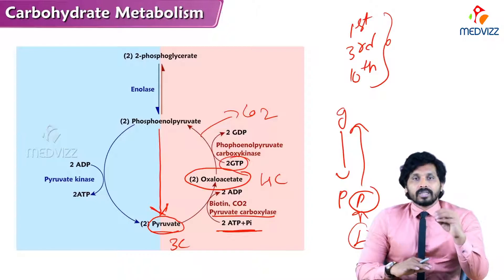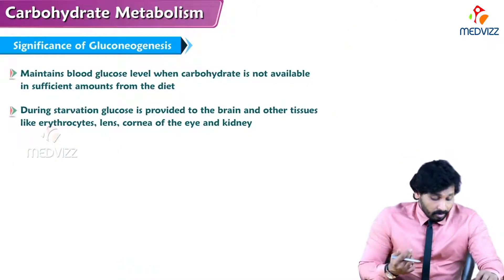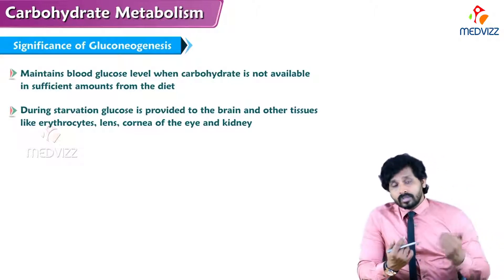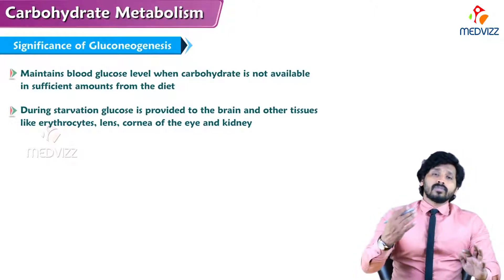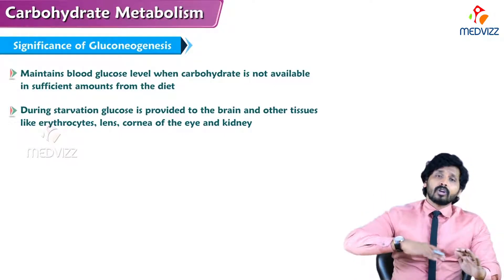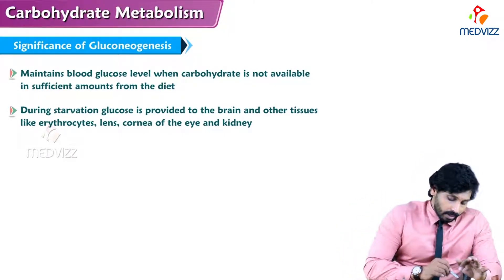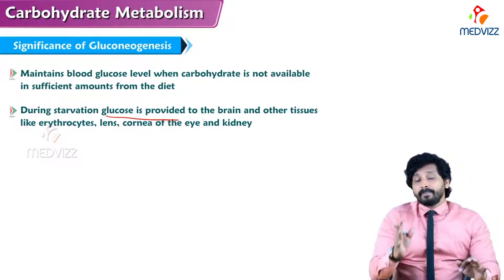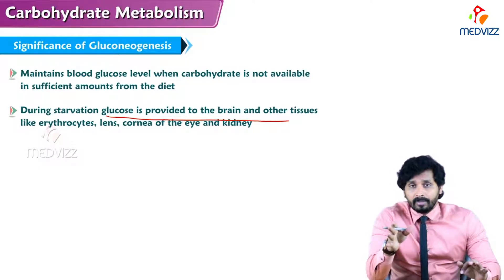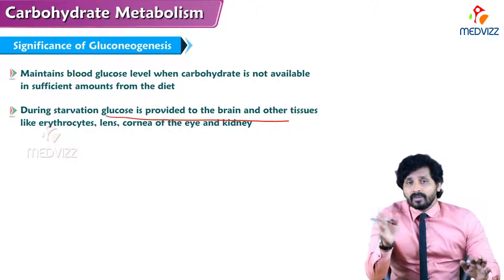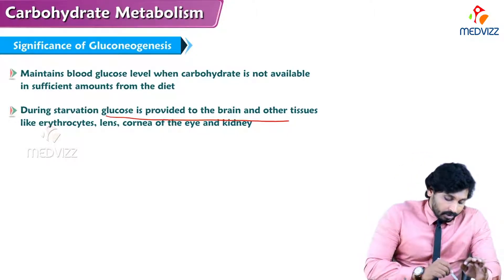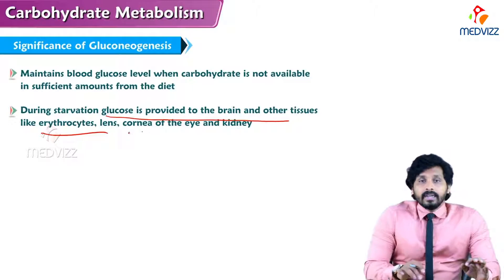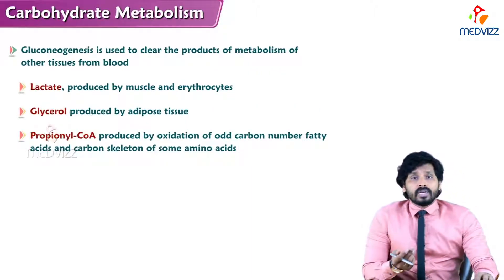When you study glycolysis properly, it is easy to understand the pathway of gluconeogenesis. Now, coming to the significance of gluconeogenesis: when there is a decrease in glucose concentration in the blood, the liver initiates gluconeogenesis, increases glucose from non-carbohydrates, and sends it to circulation to bring back normal blood glucose levels. During starvation, glucose is provided to the brain, which is solely dependent on glucose for energy production, so the liver continuously produces and supplies glucose to the brain.